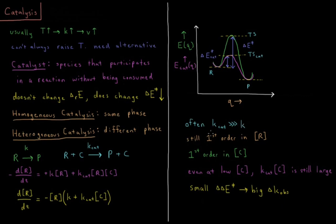So we'll notice that this reaction is still first order in our reactant. So both of them are first order in R, so we factor that out. So it doesn't change the reaction's dependence on R.